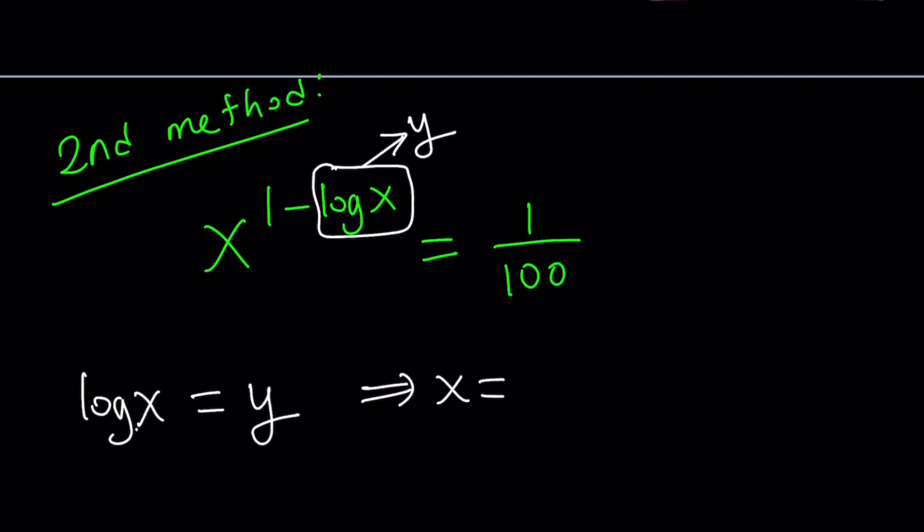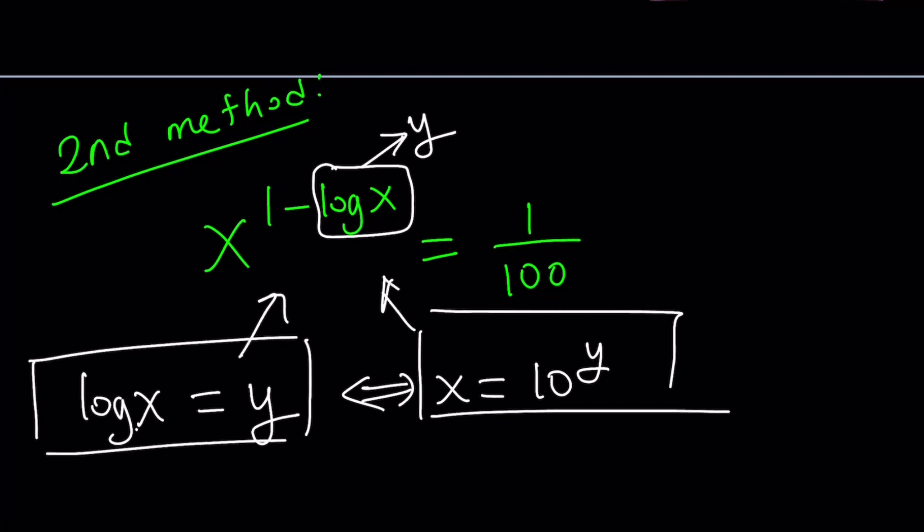x becomes 10 to the power of y. So notice that we can basically put something like a two-way implication here, because if x is equal to 10 to the y, and you log both sides, you're going to get log x equal to y. So that's the nice thing about logs, because anything exponential can be turned into logarithmic, and vice versa. x equals 10 to the y, and log x is equal to y. Let's go ahead and do the substitution.